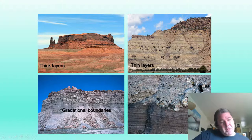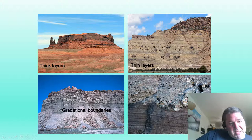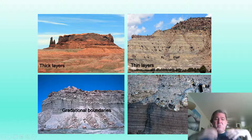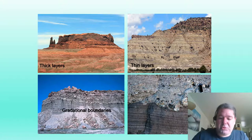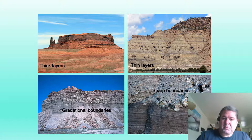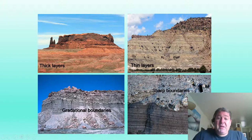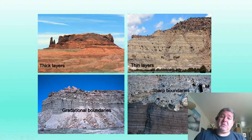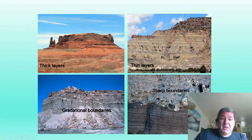We have gradational boundaries — one that goes kind of from fine and coarsening upwards. This probably indicates the sediment grades from one into another, and we're probably not dealing with much erosion. Sharp boundaries, on the other hand, probably indicate erosion. This very sharp contact boundary shows this sediment dug into the lower sediment as it was being deposited.